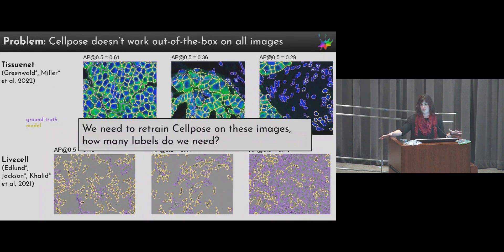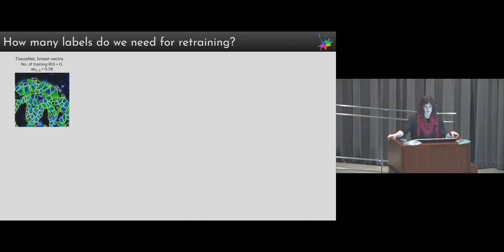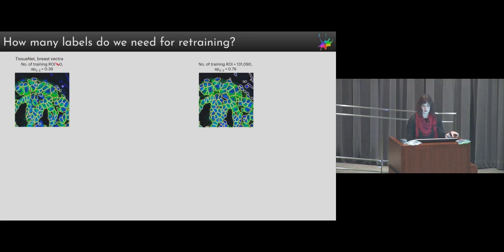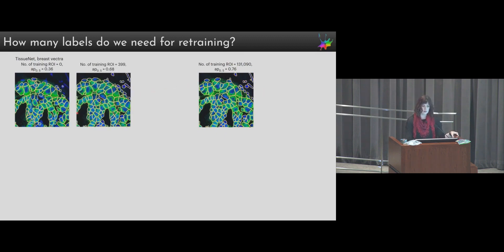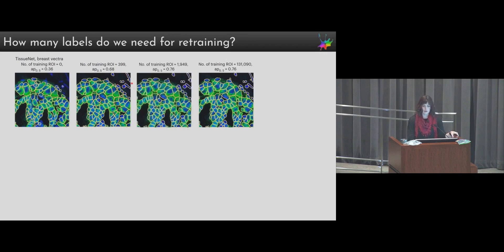In order to get CellPose to work on more different types of images we need to retrain it, and we wanted to know how many labels we actually need — ideally not the 60,000 we used to create the original training set, because that's painful. So if we take that example image, out of the box CellPose is missing those nuclei in the upper right and the AP score is around 0.36. If we train CellPose on all the ROIs labeled for that breast tissue class — 131,000 ROIs — we do much better with an AP score of 0.76. But if you retrain with just 400 ROIs, the network starts to learn that nuclei without cytoplasm labels should be segmented, and around 2,000 labeled ROIs you get saturation of accuracy around 0.76.